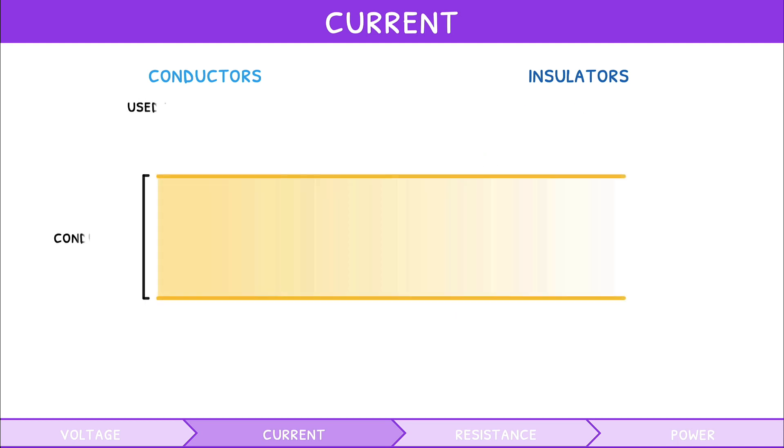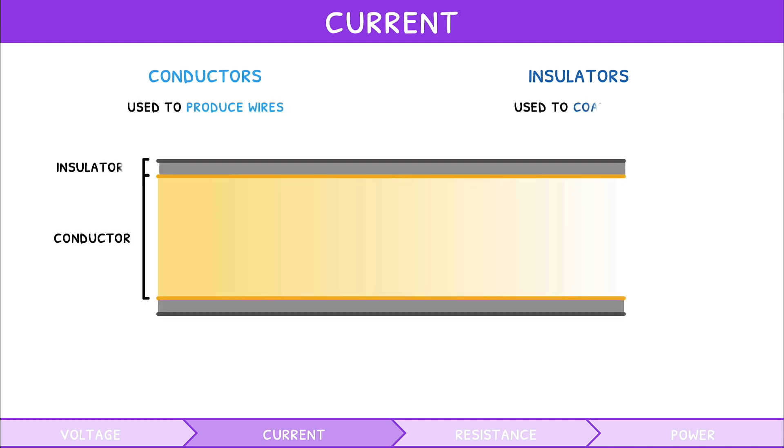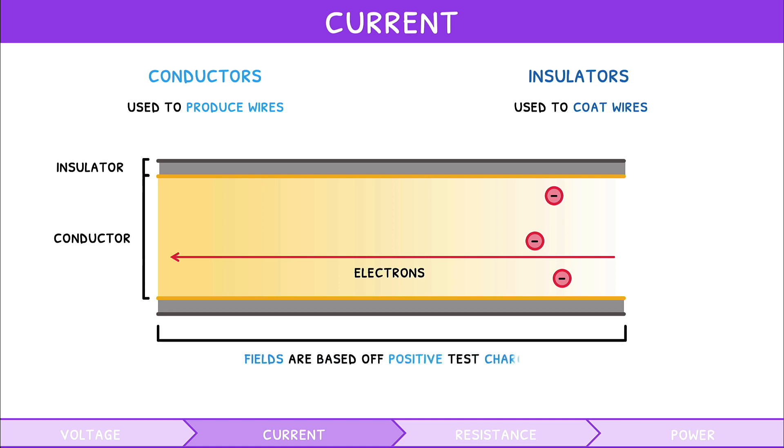Conductors are often used to produce wires, and insulators are used to coat them. Within these wires, electrons are the charge that move and create current. It is worth noting here that all of the aforementioned electric field definitions were based off test charges, which are positive. However, electrons are negatively charged, so they travel in the opposite direction of the current, i.e. from negative to positive.